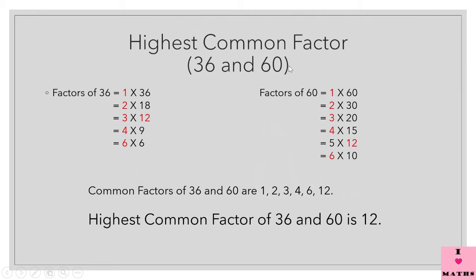Factors of a number are limited. It means for every number there are few numbers in whose table that number comes. We are going to find out the factors of 36 and 60. We are going to find out the factors in a sequential manner starting from 1, as 1 is a factor of every number and 1 is the smallest factor of every number.